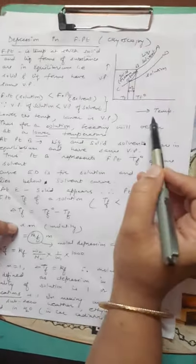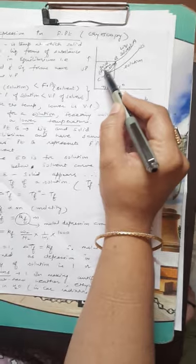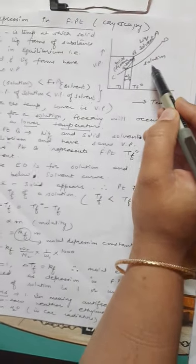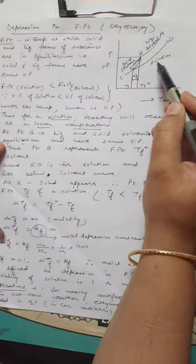This graph is between vapor pressure and temperature. This AB curve is for liquid solvent, BC curve is for solid or frozen solvent, and ED curve is for solution which is lying below solvent curve.